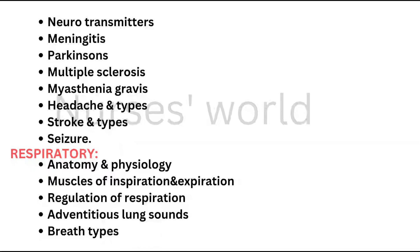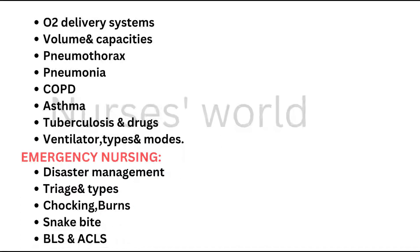Respiratory system: muscles of inspiration and expiration, regulation of respiration, lung volumes and capacities, total lung volume. Lung sounds, abnormal sounds, breath types, O2 delivery systems. Pneumothorax, pneumonia, COPD, asthma, tuberculosis — very very important — its drugs and other complications. Ventilator — very important — types and modes.